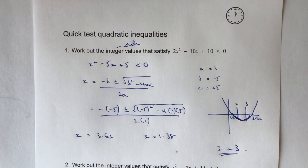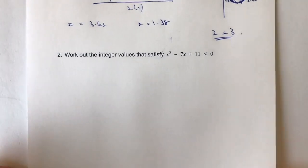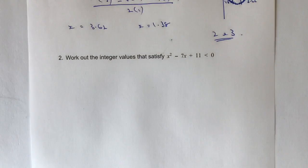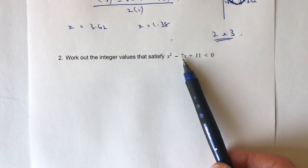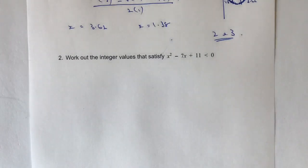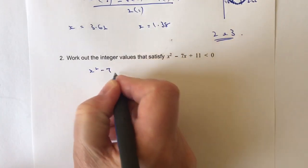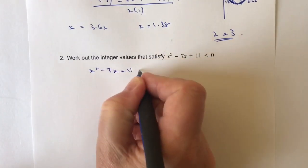Let's move on to a second example which we can treat in exactly the same way. Again, it's about spotting that you can't factorise this — you're going to have to use the quadratic formula. Perhaps you could try completing the square but you have to be very careful because this would then be 7 over 2, which can be quite difficult if you're not sure about working with fractions. In this particular case we get x squared minus 7x plus 11 is less than zero.